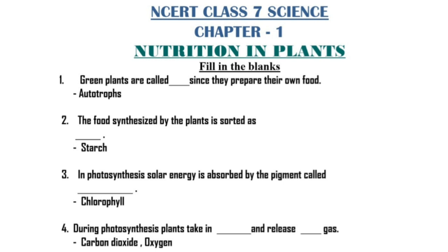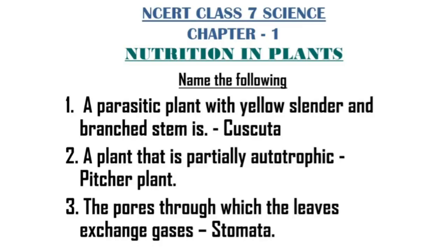That was fill in the blanks. We are now at name the following. Number one: a parasitic plant with yellow, slender and branched stem is Cuscuta. Number two: a plant that is partially autotrophic is pitcher plant. The pores through which the leaves exchange gases are known as stomata.